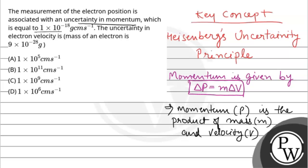Now in the question, momentum is 1 × 10^-18 gram centimeter per second and the mass is given, so we need to find velocity. We will substitute these values into this expression.